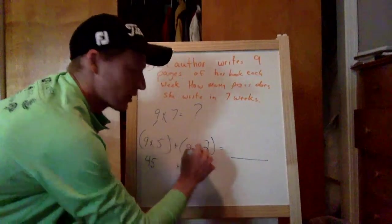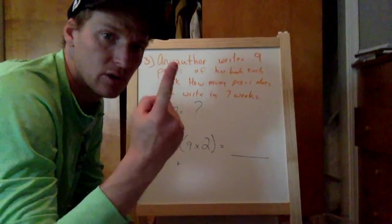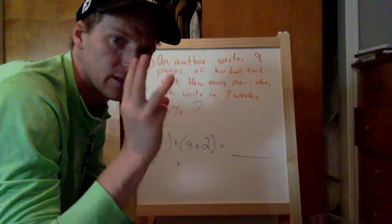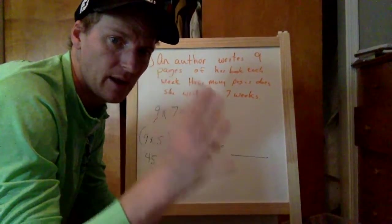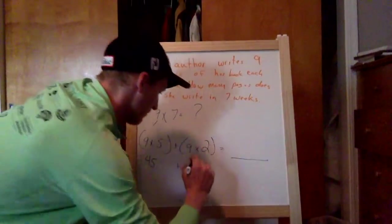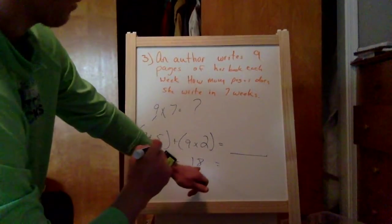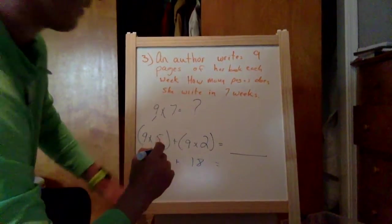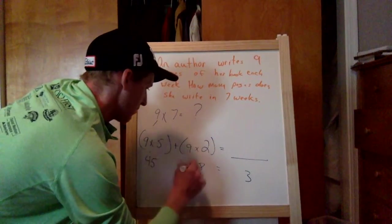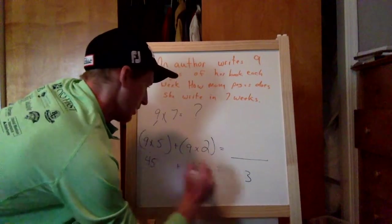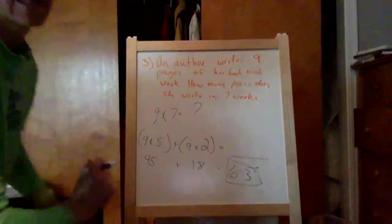Plus, we know our twos. We may not know our nines, but we know our twos. Two, four, six, eight, ten, twelve, fourteen, sixteen, eighteen. Let's set them up. Eight plus five is thirteen. Four plus one plus one, six. The answer is sixty-three.